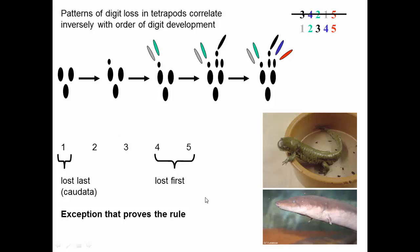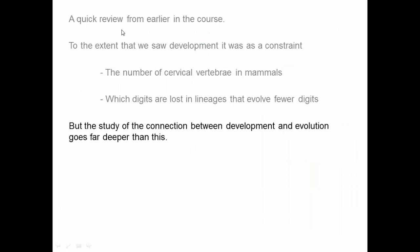This is actually really interesting, and evolutionary developmental biology is a relatively new and fast-growing field. It studies the relationship between development — how adults get their structures — and evolution — the relationship between fitness and which structures do well and which adults get to reproduce. We saw development as a constraint, but the connection between development and evolution is actually more complex than just thinking about constraints.